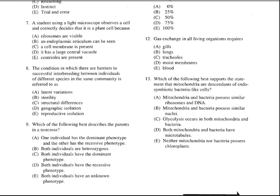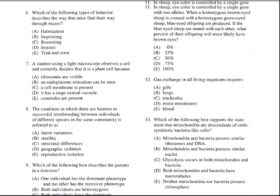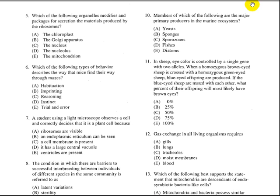Question number 10 says, members of which of the following are the major primary producers of the marine ecosystem? Yeasts? Well, yeasts are actually heterotrophic, so that's not the answer. Sponges are animals, which are heterotrophic as well. Sporozoans are heterotrophic. Fishes are heterotrophic as well. Diatoms are actually autotrophs, so that is the answer. Probably sponges can be primary consumers, not primary producers. Fishes are probably secondary consumers, not producers. So answer is E.